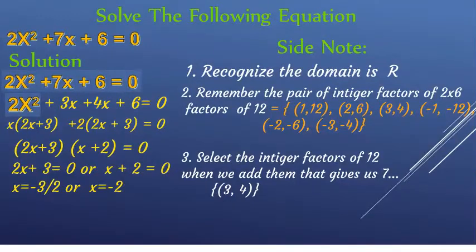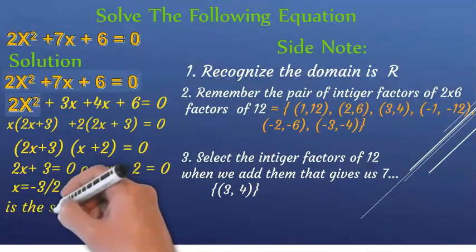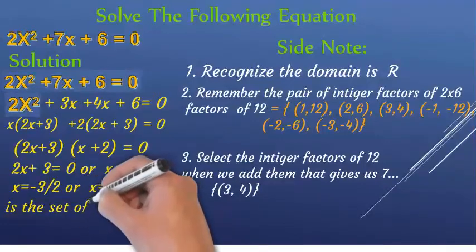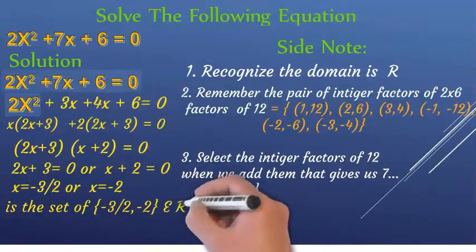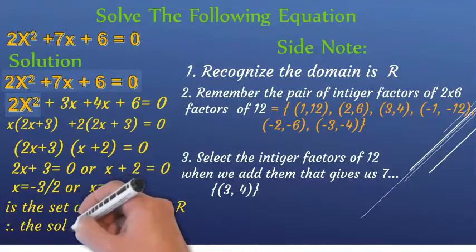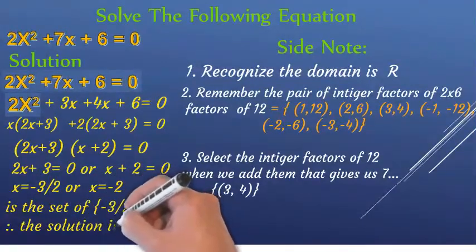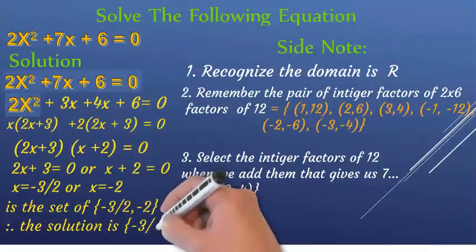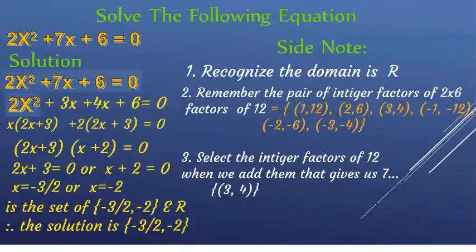We have to check whether the solutions are real numbers. Therefore, the solution contains the set with minus 3 over 2 and minus 2.